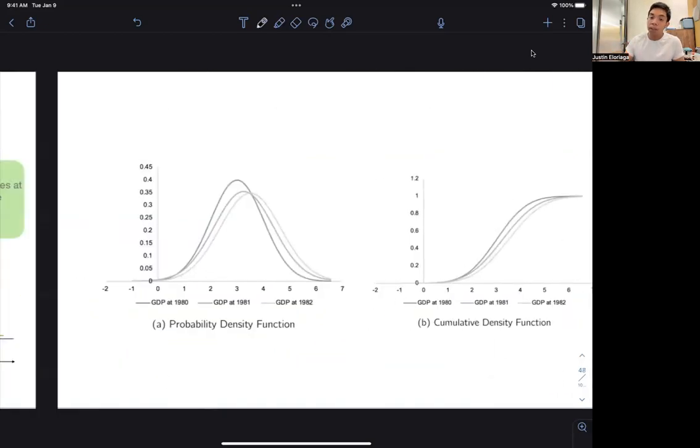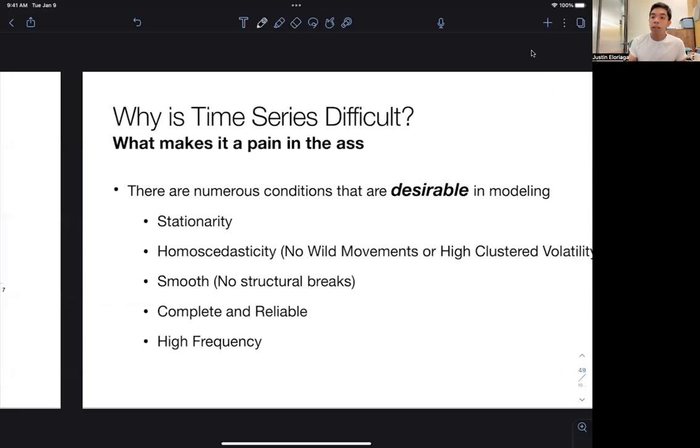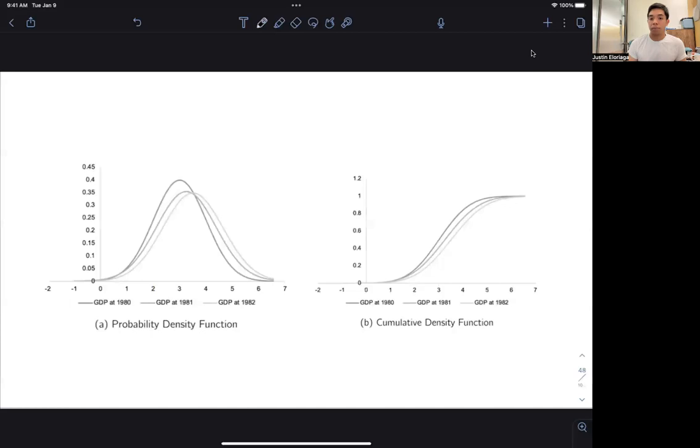The collection of all these realized values is the time series. The collection of the PDFs is the stochastic process. You can even illustrate it further. You can overlay these PDFs into one graph as I did here in graph A. And because this is a PDF, it has a corresponding cumulative density function or CDF, which sums up to 1. So that's how we view the stochastic process.